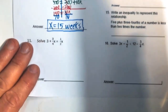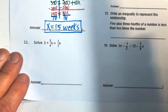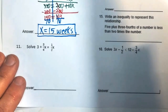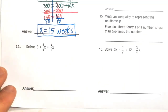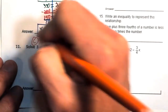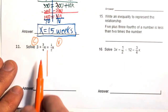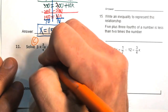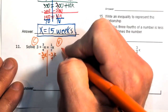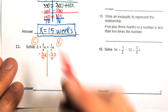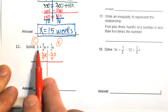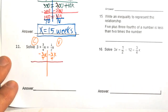Number eleven: solve 3 plus three-fourths x equals one-half x. We have fractions involved. Move all variables to the right and constants to the left. Subtract three-fourths x from both sides — this takes only one move to get all variables on one side.